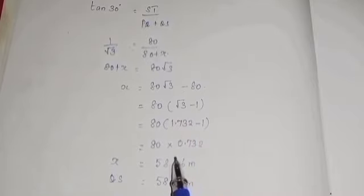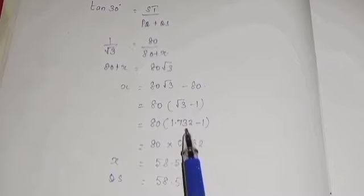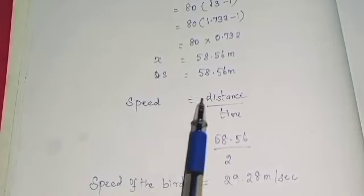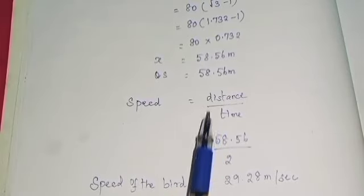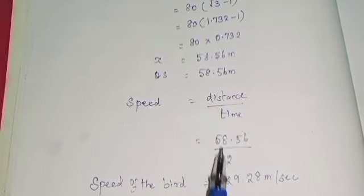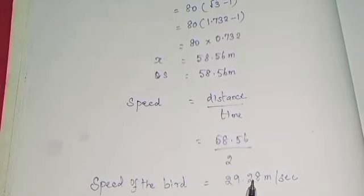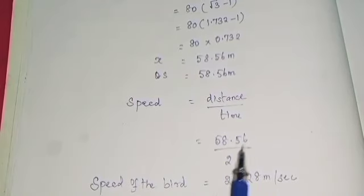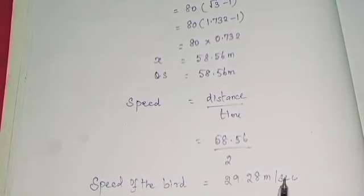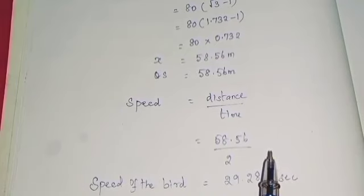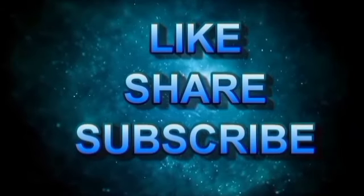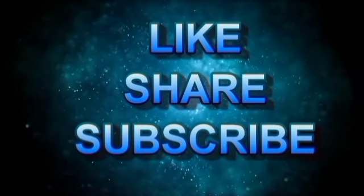Now we calculate the speed using the formula distance by time. The distance is 58.56 meters, and the time is 2 seconds. Dividing, the answer is 29.28 meters per second. So the speed of the bird is 29.28 m/s. Thank you for watching.